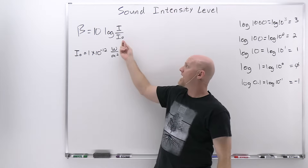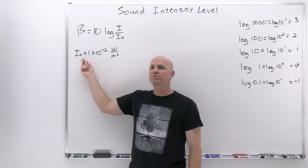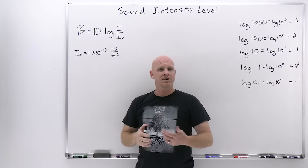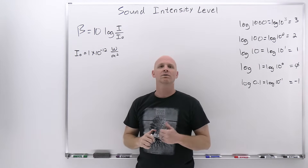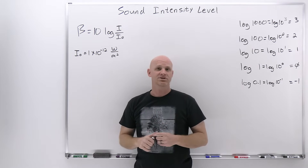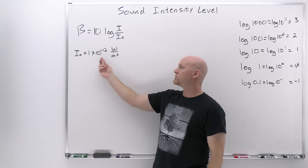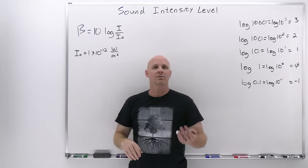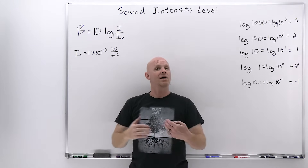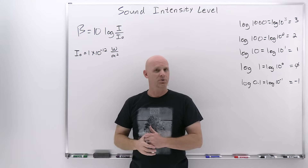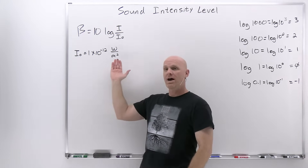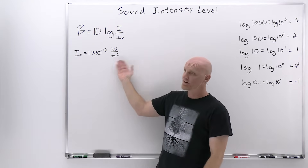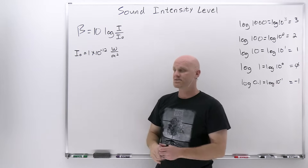We also need to bring up I-naught, which is what we call the threshold of human hearing. For the average human ear, it's the lowest intensity sound that ear can detect. It has a value of 1 times 10 to the negative 12 watts per meter squared. There are people with better or worse hearing, but on average, that's the lowest intensity sound the average human ear can detect.